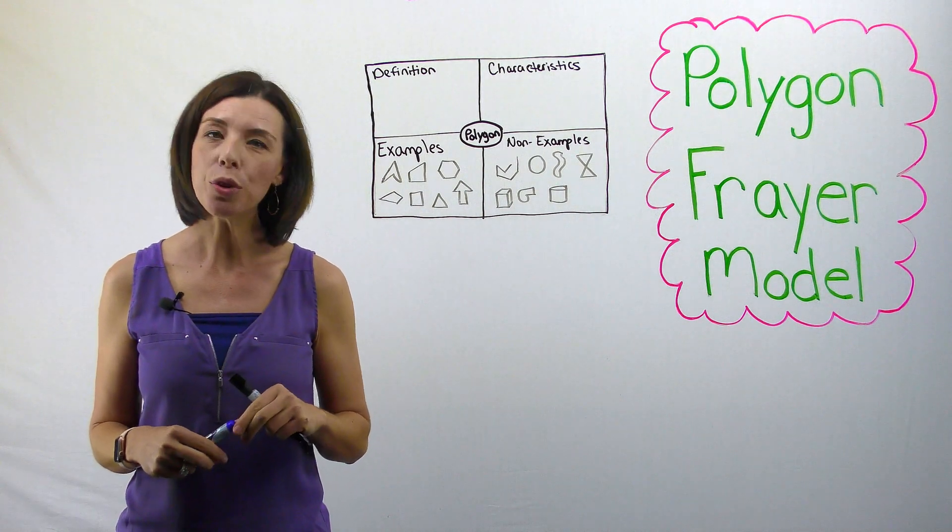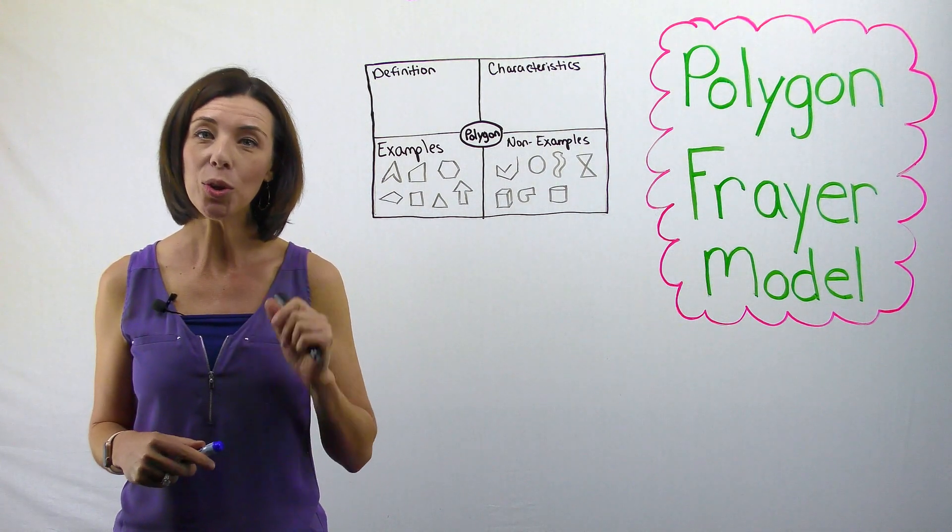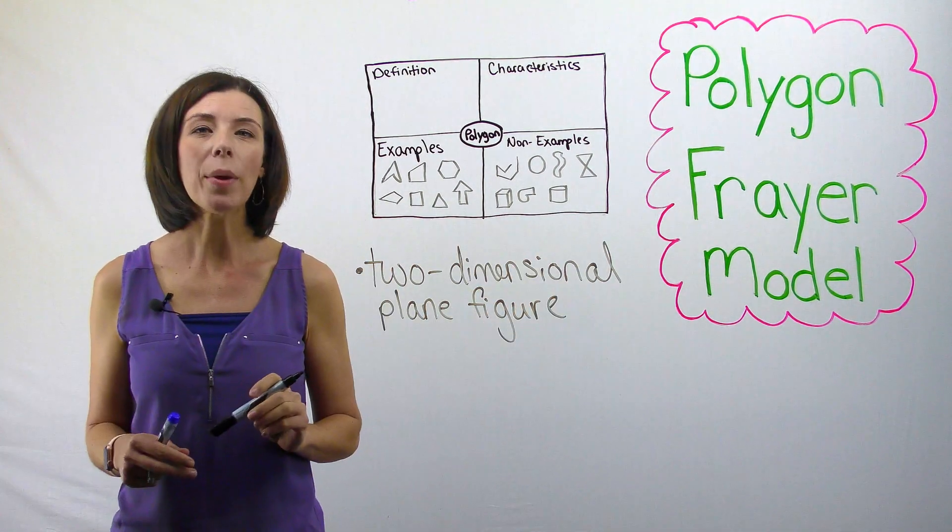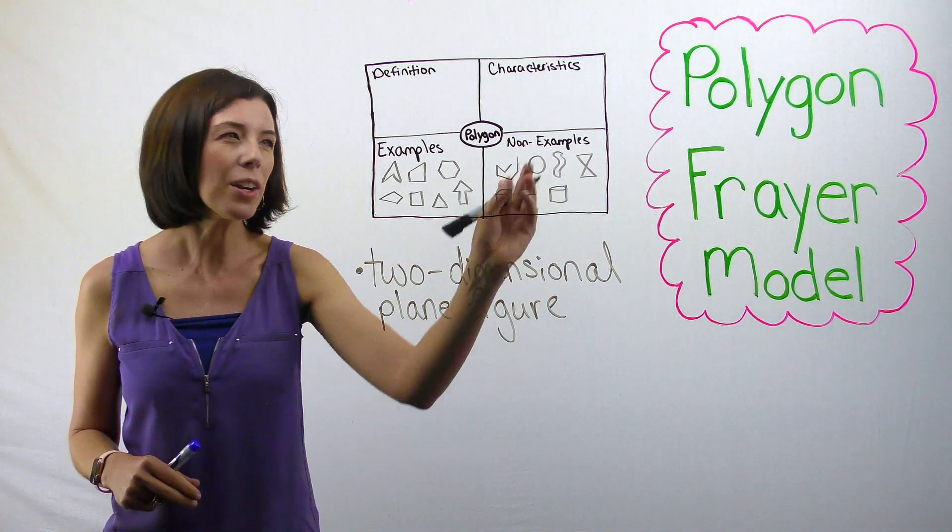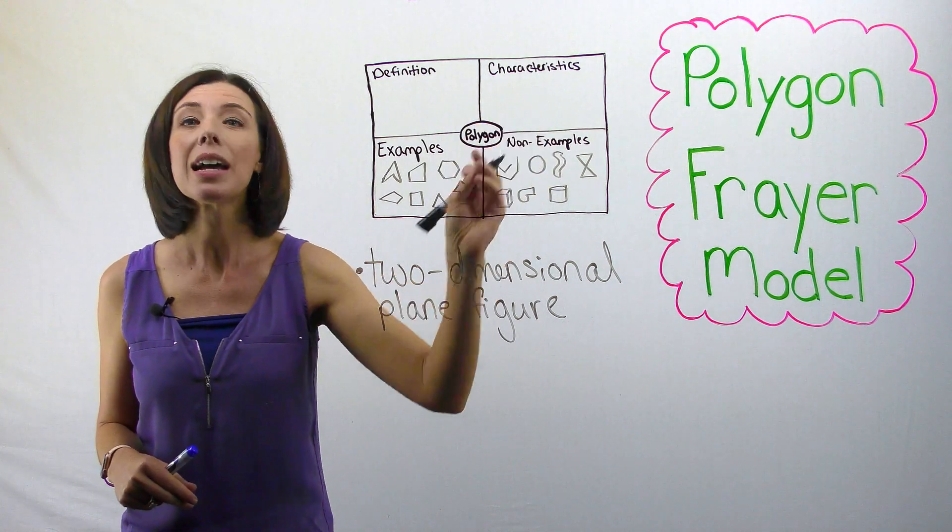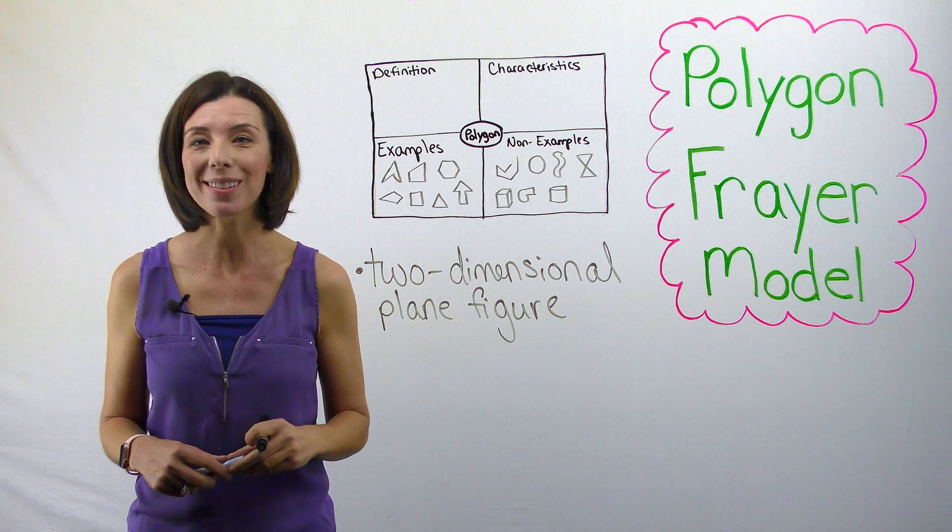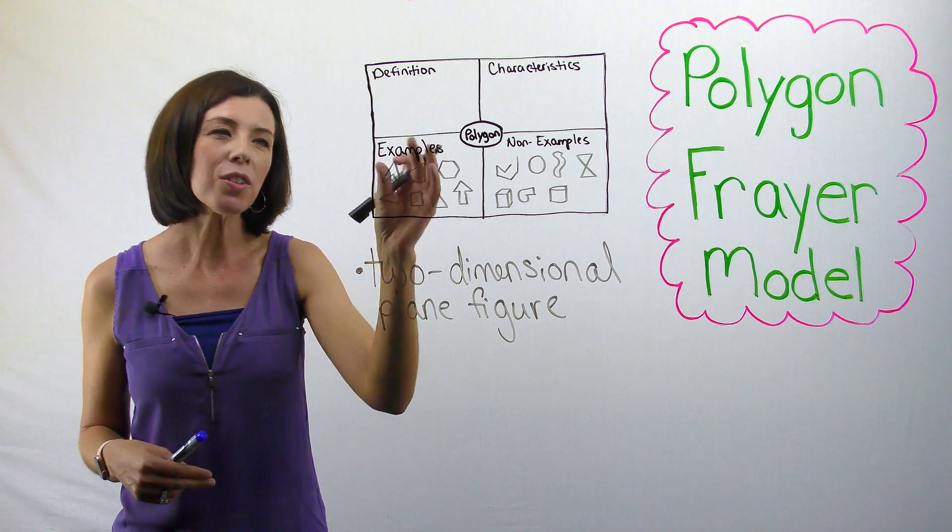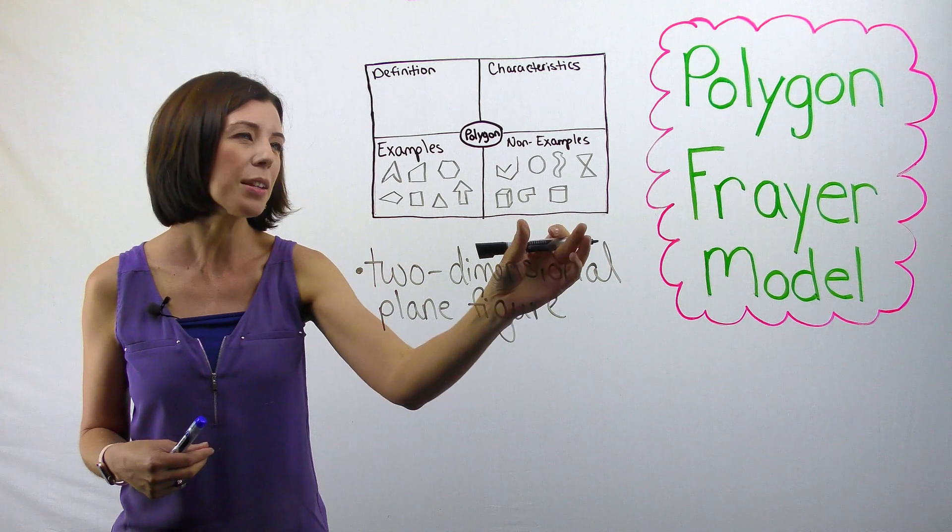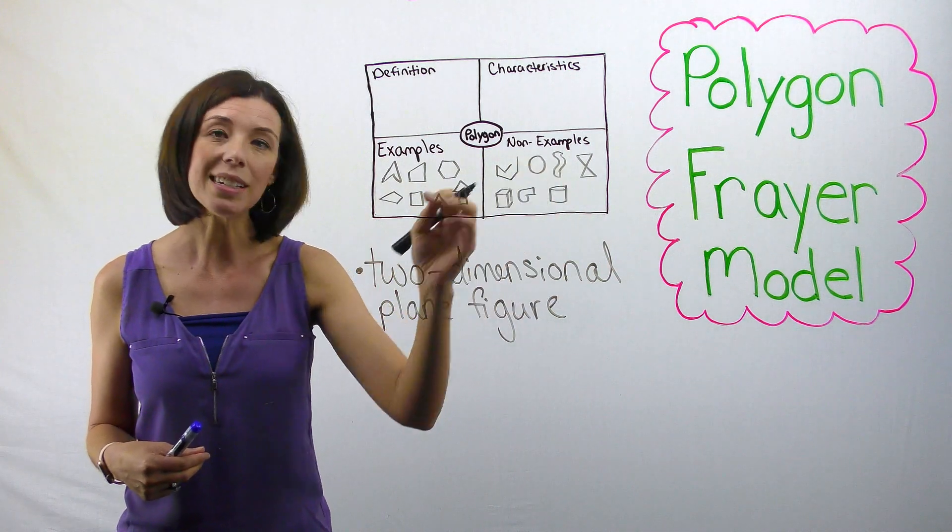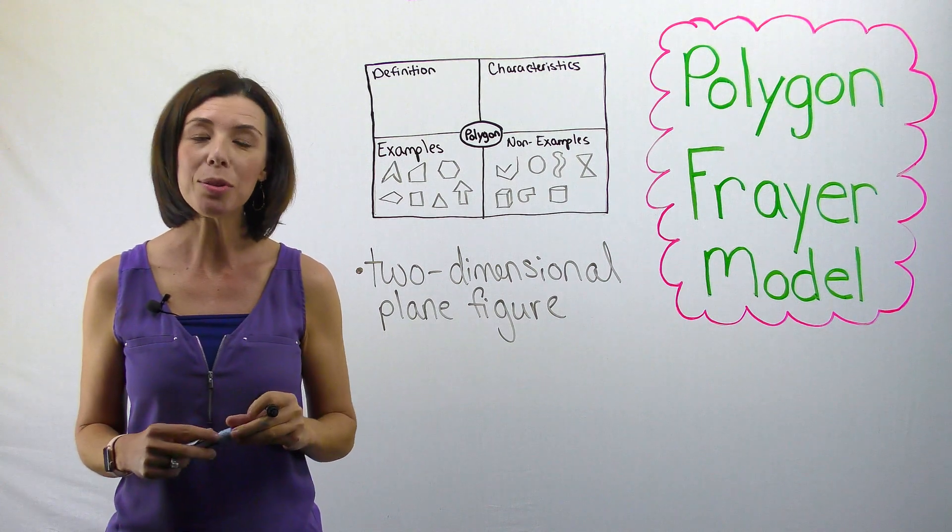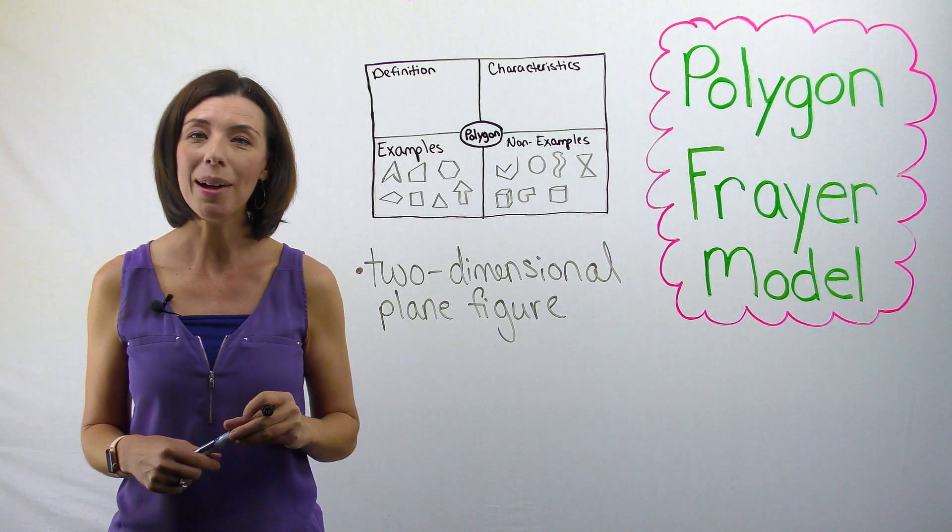If you said that it was a two-dimensional plane figure, you would be correct. By the way, I'm going to write mine down here because I don't have as much room in the characteristics, but I want you to be writing these ideas up here in the characteristics box. How about, did you notice for all these examples that they all had straight sides, unlike some of these non-examples, where I see some curved sides there? So, straight sides would also be a characteristic of a polygon.